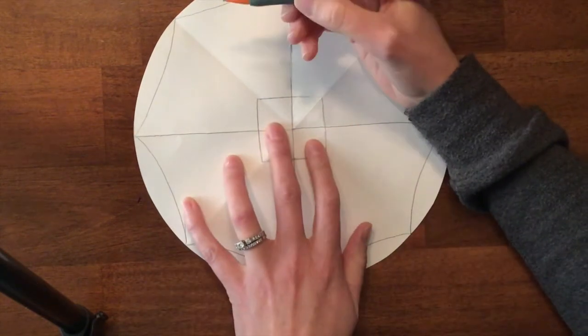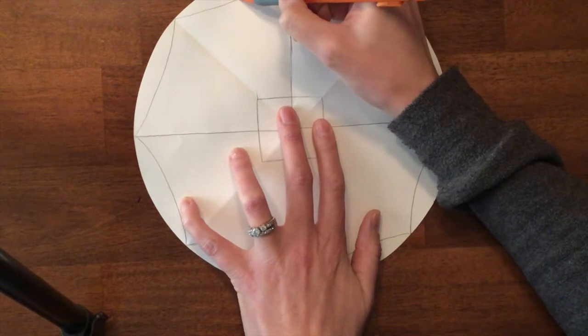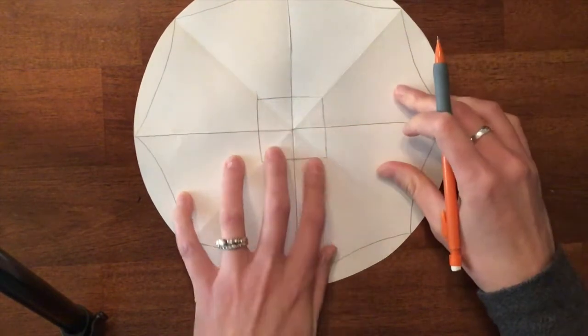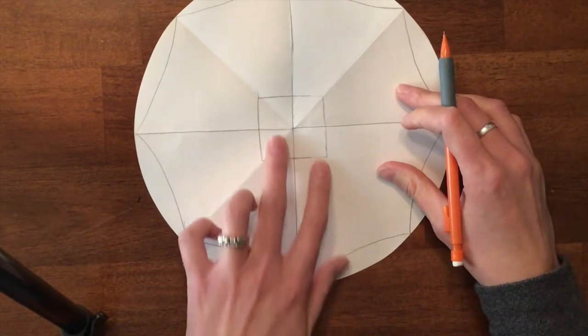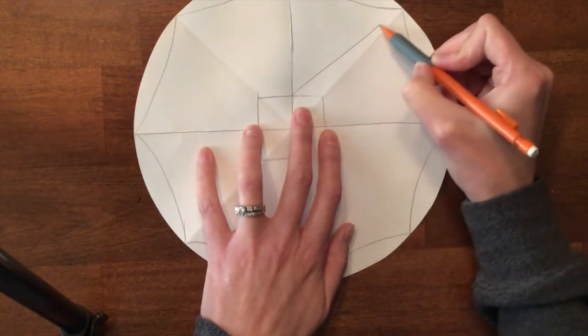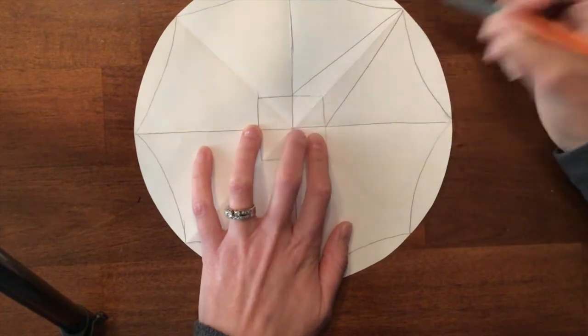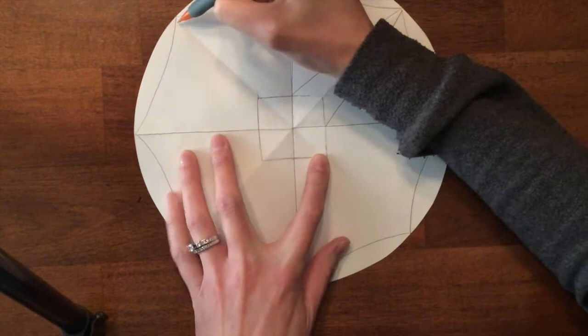And then from that square, I want to go, no, I don't want to do that. Maybe I want to go from here up to the point and here up to the point. Since I did it there, I also have to do the same thing here.